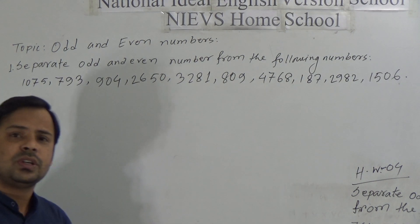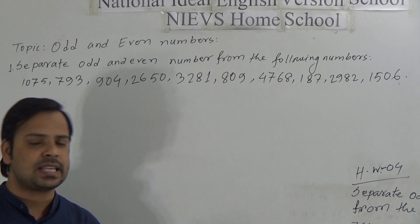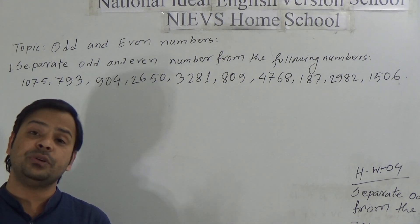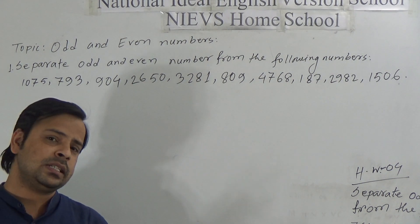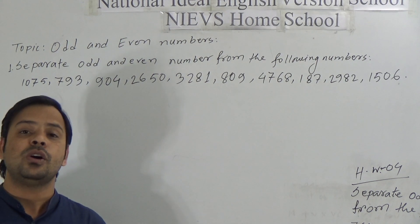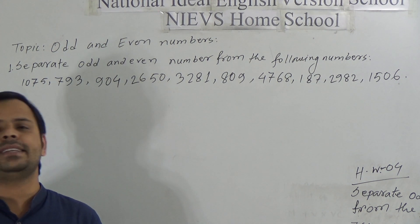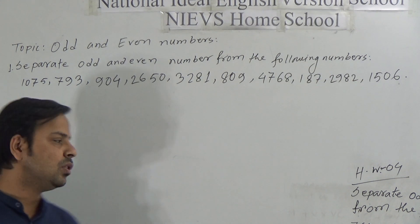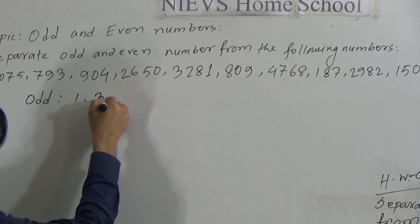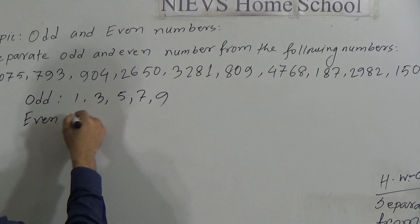Dear students, if the unit place of a number is 1, 3, 5, 7, or 9, then the number is called an odd number. So if the ones place or unit place is 1, 3, 5, 7, or 9, then the number will be odd. And when the unit place is 0, 2, 4, 6, or 8, then the number will be even.